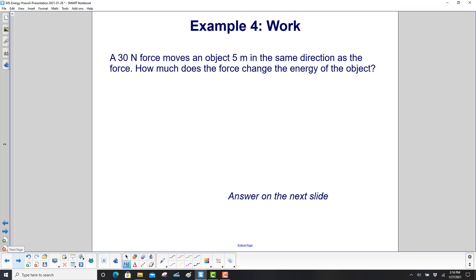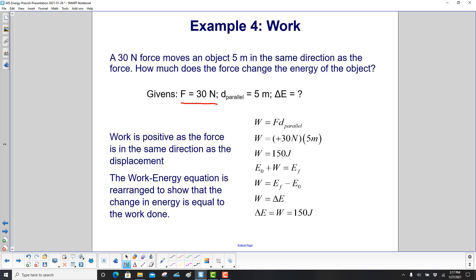A 30 newton force moves an object 5 meters in the same direction as the force. How much does the force change the energy of the object? So here's our givens, and we want to find the change in energy. So let's find the work first. The work will be force times a distance parallel, and it will be positive if it's in the same direction, which it is. So work is plus 30 newtons times 5 meters, or 150 joules. Now we use our work energy equation here. Initial energy plus work equals final energy. We rearrange that to solve for work, so work is final energy minus initial, and that's also known as change in energy. So the change in energy equals work, so it's 150 joules.